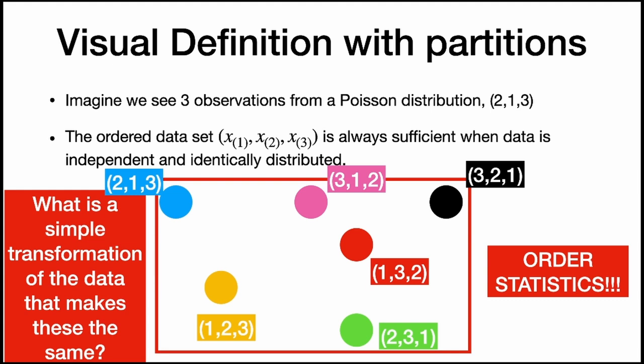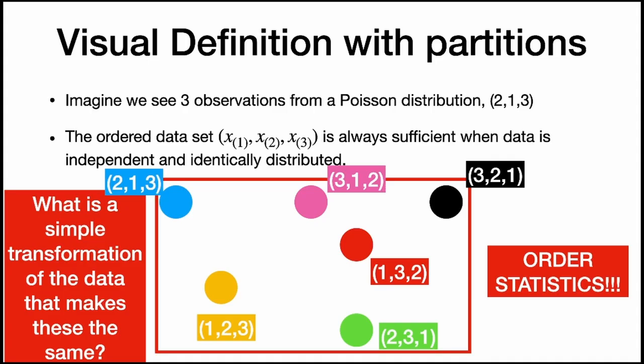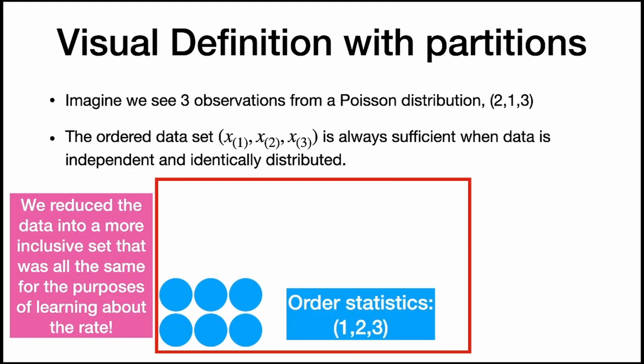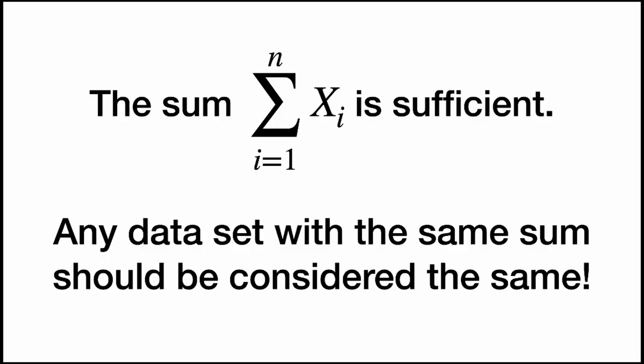So the ordered data set is sufficient. Let's sort each data set — once sorted, they're all really the same. We reduced the data into a more inclusive set that was all the same for the purposes of learning about the rate. But are there also other data sets that might also be the same? In a Poisson distribution, the sum of our data set is sufficient, so any data set with the same sum should also be considered the same.